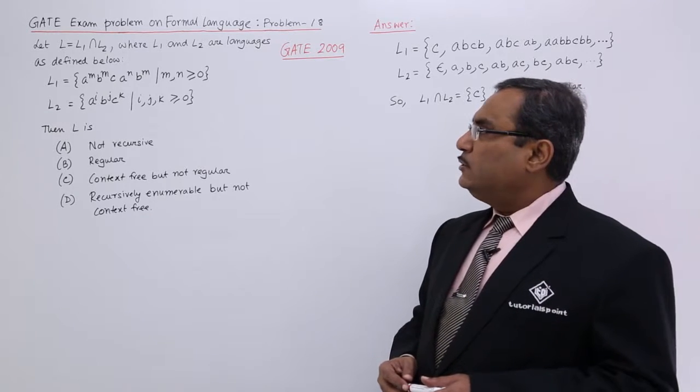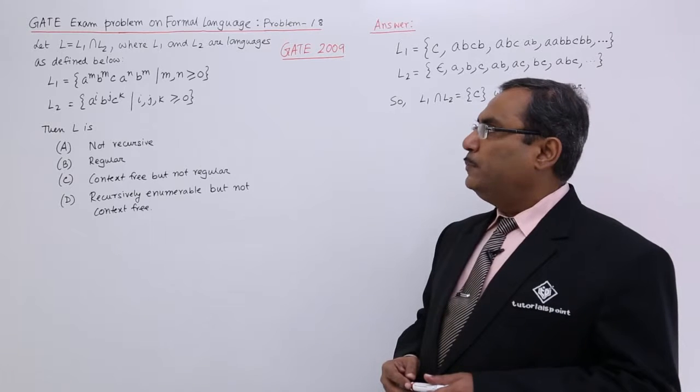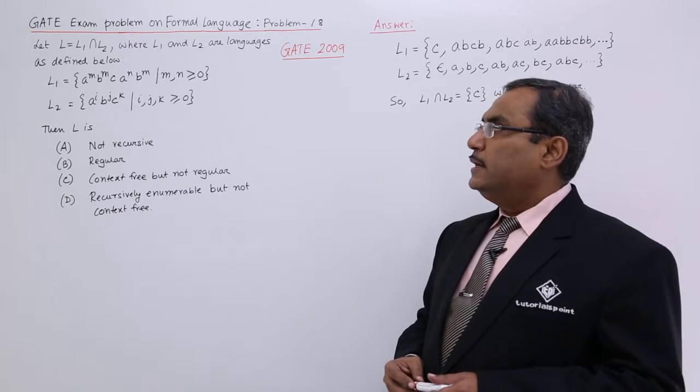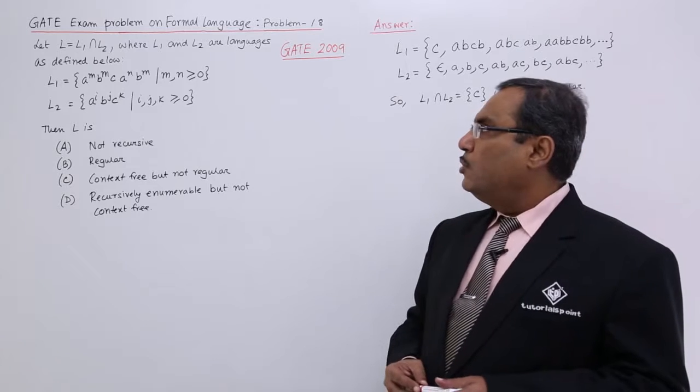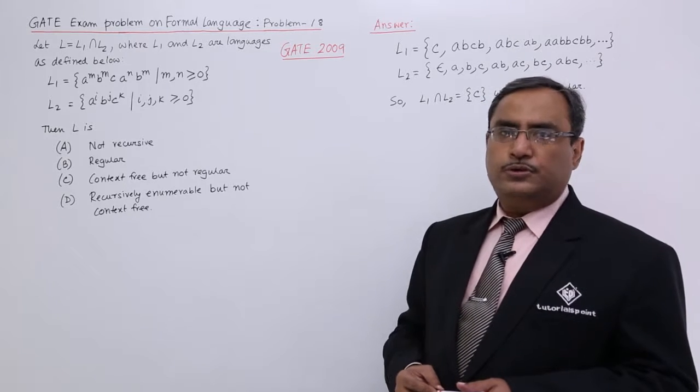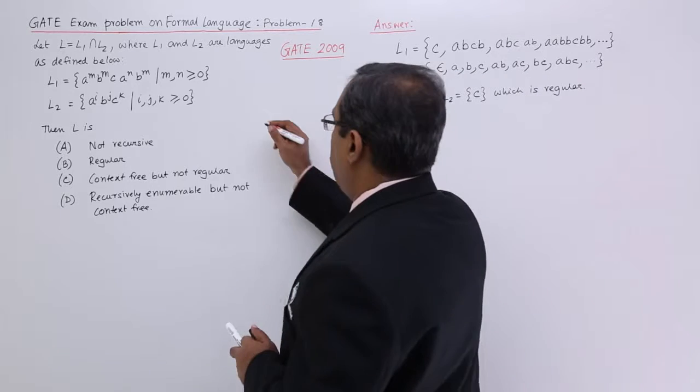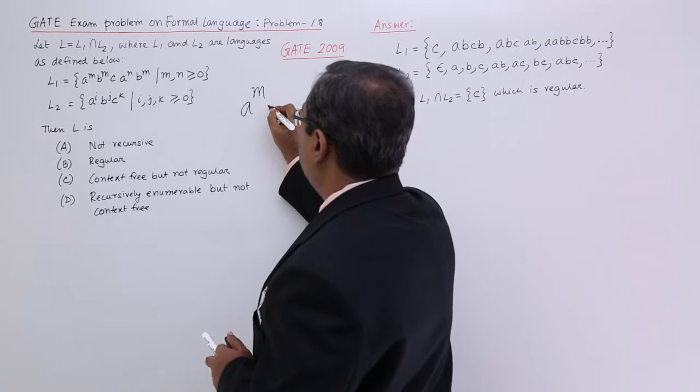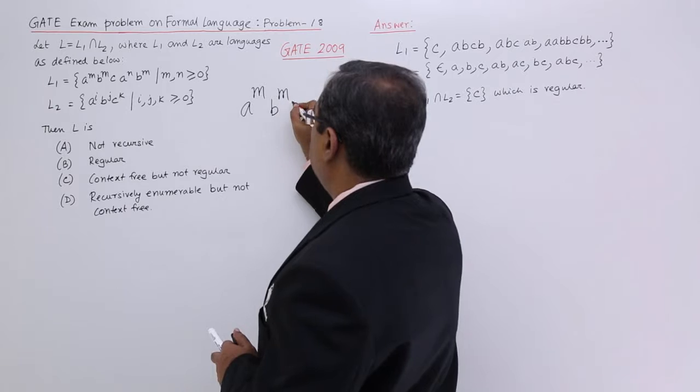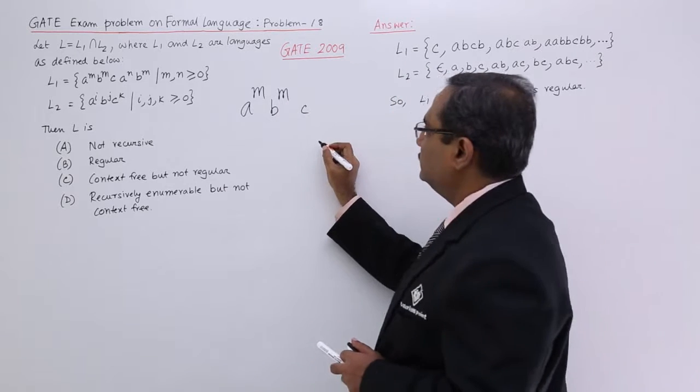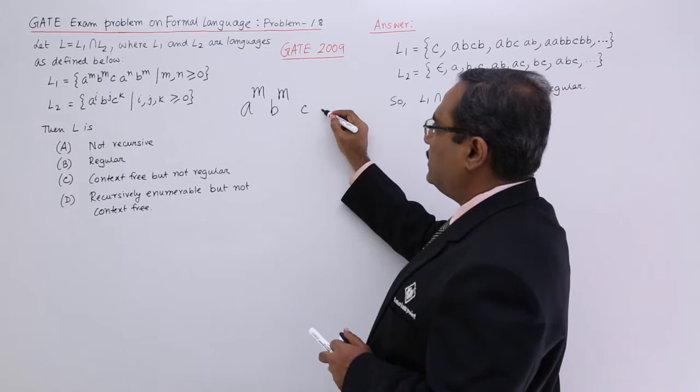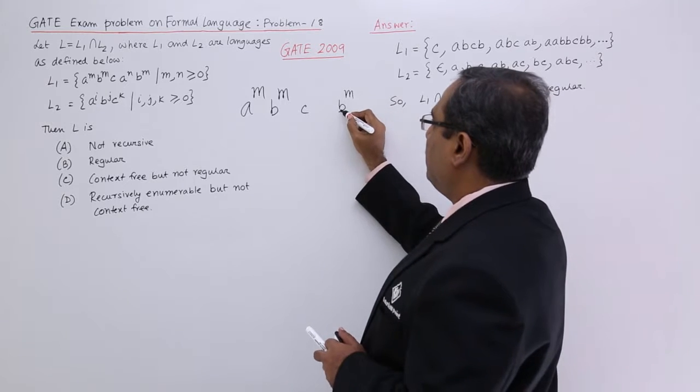L1 equals A to the power of M, B to the power of M, C, A to the power of N, and B to the power of N, where M, N is greater than or equal to 0. That means we are having A^M B^M, then C, then A^N B^N.